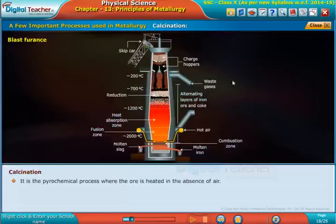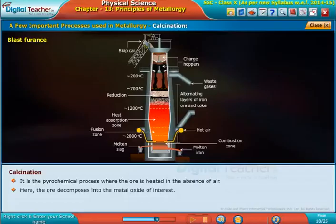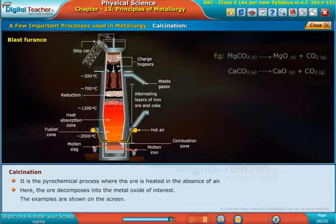Calcination: It is a pyrochemical process where the ore is heated in the absence of air. Here, the ore decomposes into the metal oxide of interest. The examples are shown on the screen.